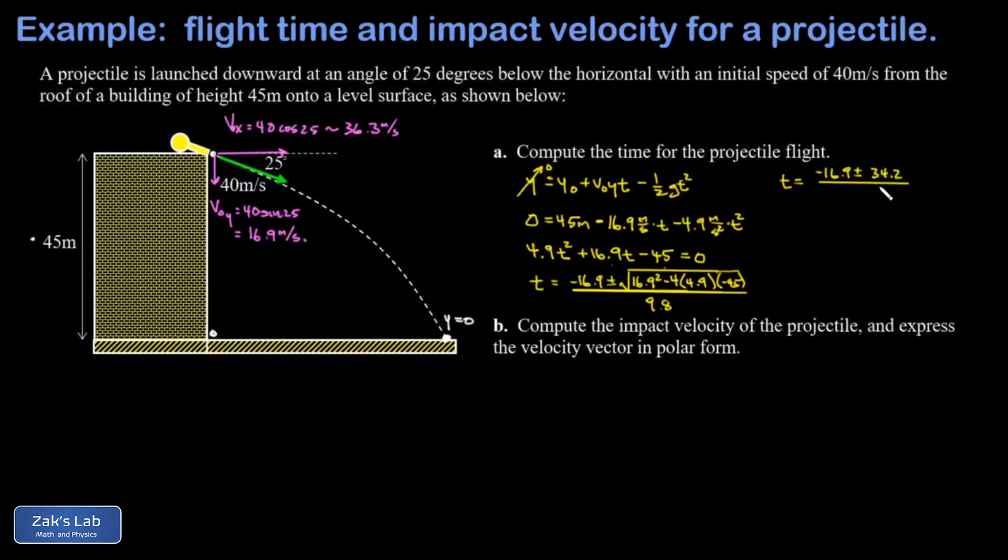34.2 all divided by 9.8. Now we want to keep the positive solution here, and that corresponds to the plus in the numerator. When I take negative 16.9 plus 34.2 and divide the result by 9.8, I get a flight time of 1.76 seconds.